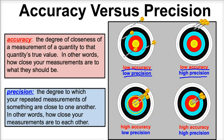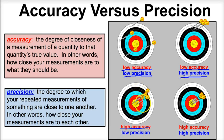In this next example, we're pretty close to the bullseye, so we have high accuracy. However, if we take a look, we have relatively low precision — these darts are kind of far away from one another, so we're going to say that we have low precision here.